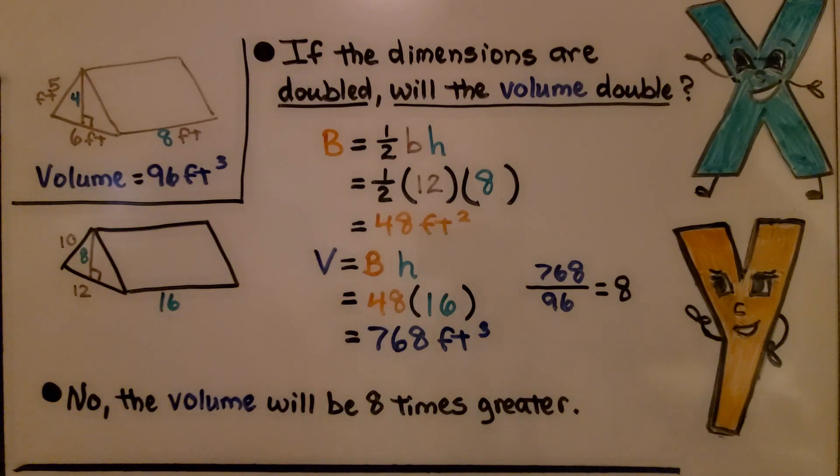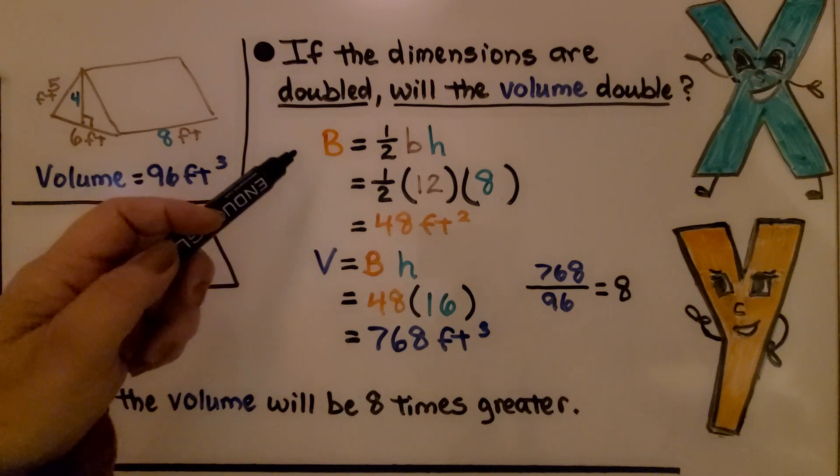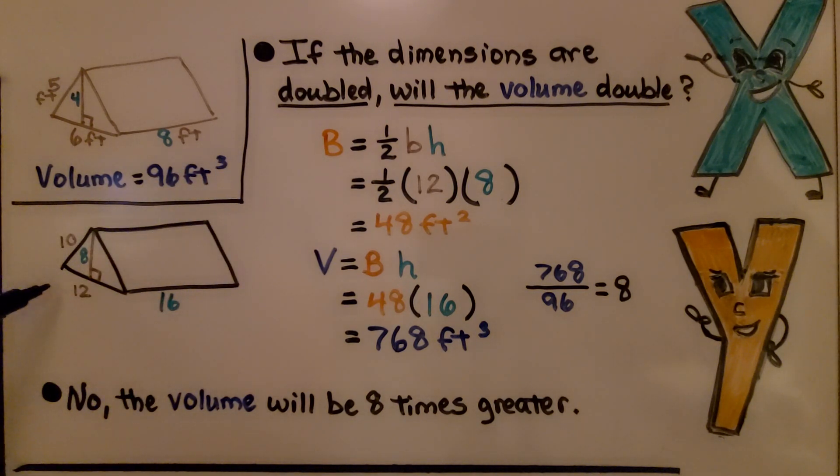We found that his tent volume was 96 feet cubed. If the dimensions are doubled, will the volume double? You would think so. Our base for doubling would be ½(12)(8). This was 6, we doubled it to 12. This was 4, we doubled it to 8.